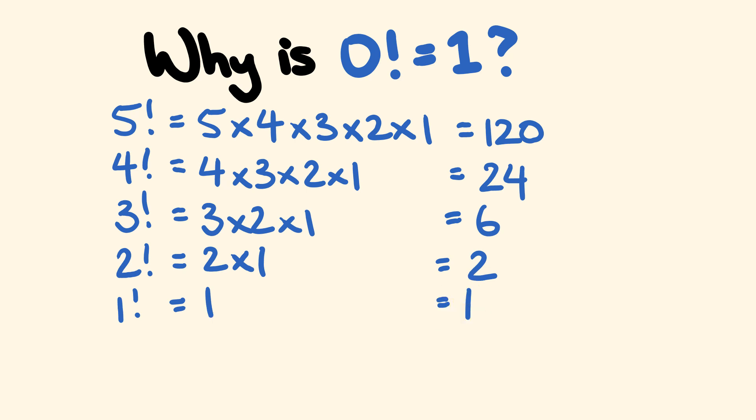But now what we have is this question here. Why do we have zero factorial equaling one? And I'm going to show you this right now, first off with a pattern and then using a bit of math here.